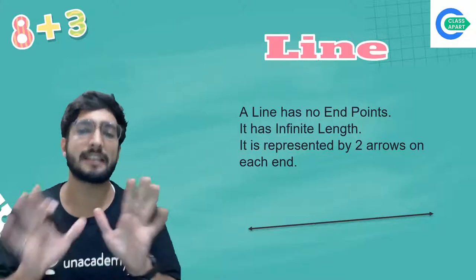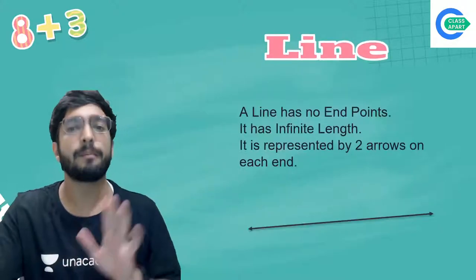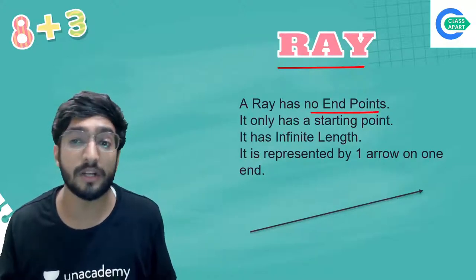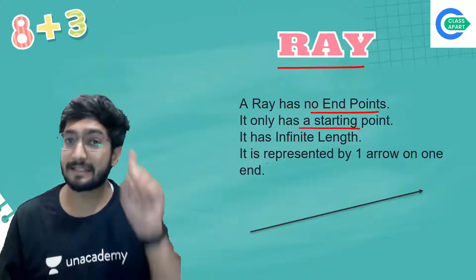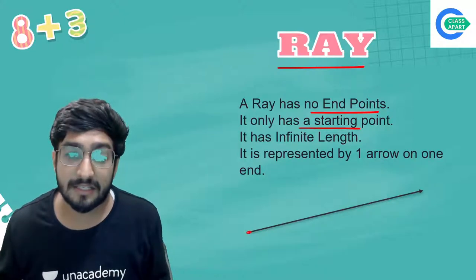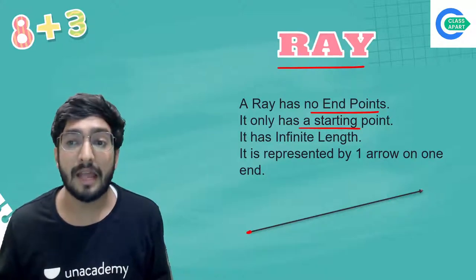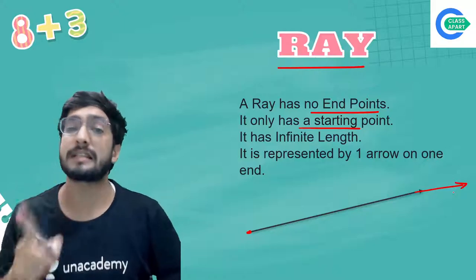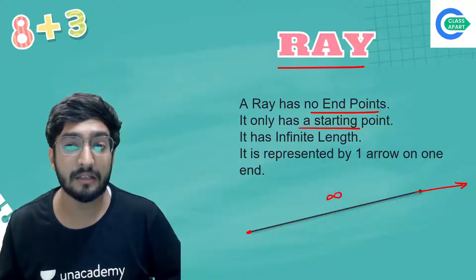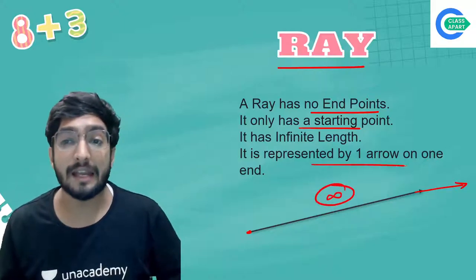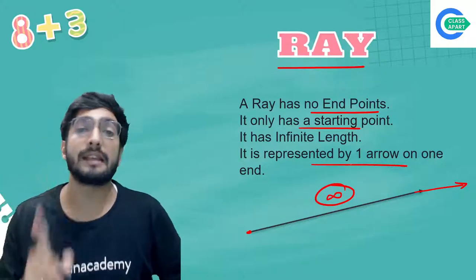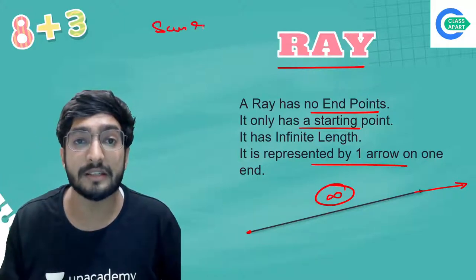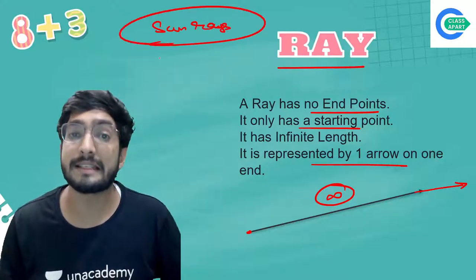A line has no real-life example because it is a purely mathematical concept. But a ray has examples. A ray has no endpoint but it has a starting point. It starts from one point and never ends — wherever you put the arrow, you can stretch the length infinitely. A ray requires one arrow. A good example of a ray is sun rays.